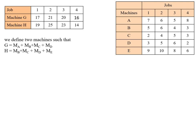For machine G — which is M_A + M_B + M_C + M_D — for job 1: 7 + 5 + 2 + 3 = 17. For job 2: 6 + 6 + 4 + 5 = 21. For job 3: 5 + 4 + 5 + 6 = 20. For job 4: 8 + 3 + 3 + 2 = 16.